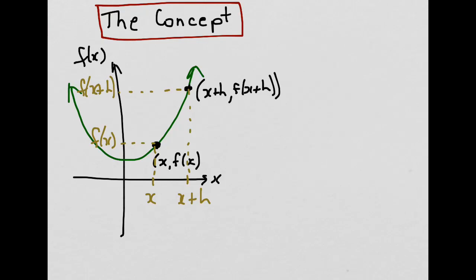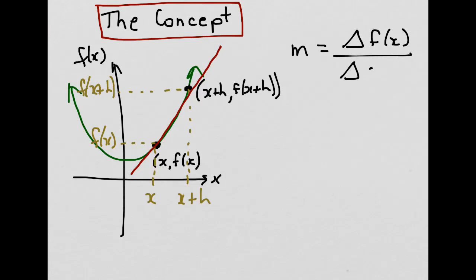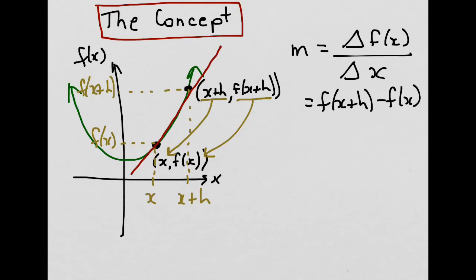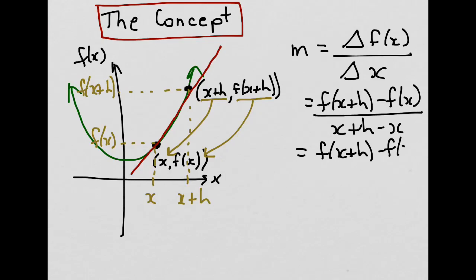So what would the slope of the line connecting those two points be? Let's draw it — in this case it's a secant line because it touches the curve at two points. We know that slope is equal to the change in f(x) divided by the change in x. The change in f(x) means take this value and subtract it from that value; the change in x means take this value and subtract it from that value. So we end up with f(x plus h) minus f(x), divided by x plus h minus x, which simplifies to f(x plus h) minus f(x) divided by h, because the x's cancel out.